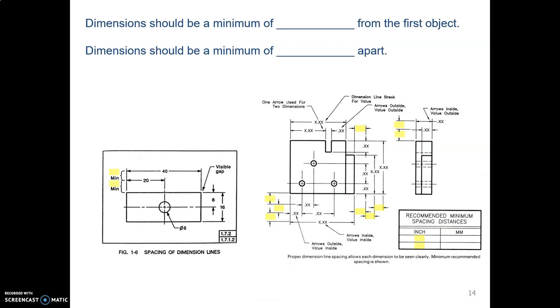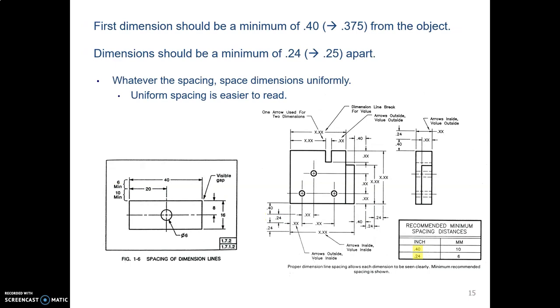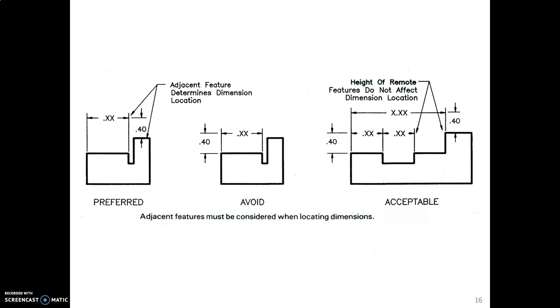How far from the object should the first dimension be? And then how far apart should subsequent dimensions be? The first one should be 0.4, and here we're translating from metric to inch, is why that's an odd number for us. The first dimension should be 0.4 from the object, or around 3 eighths. And subsequent dimensions should be 0.24, or approximately a quarter of an inch. And whatever spacing you make them, make them uniform. These are just minimum distances. They can be farther, but they should be consistent.